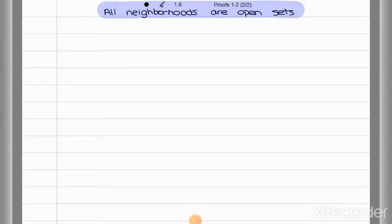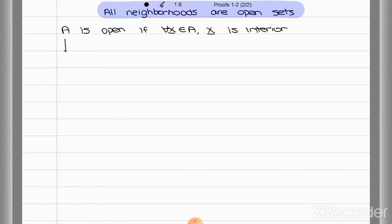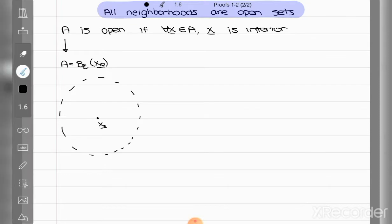For this proof we're going to need a few definitions. The first one is a definition of an open set. We can say that a set A is open if every point that belongs to the set is interior. The set that we're considering is a neighborhood, so A is equal to the neighborhood with radius epsilon of a point x₀. We draw a neighborhood, which is just a circle if you're talking about two variables, with a radius of epsilon.